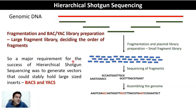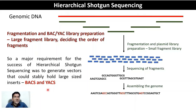A major requirement for the success of hierarchical shotgun sequencing was to generate vectors that could stably hold large-sized inserts — as big as 150 kb, 250 kb, 300 kb, or even 500 kb as can be held in YACs or yeast artificial chromosomes. With this background, we now move on to discuss bacterial artificial chromosomes and yeast artificial chromosomes.